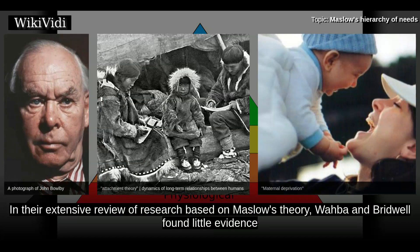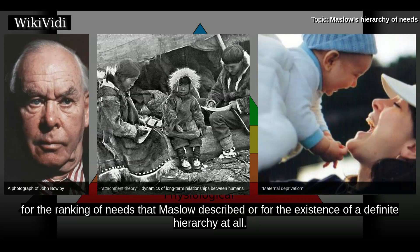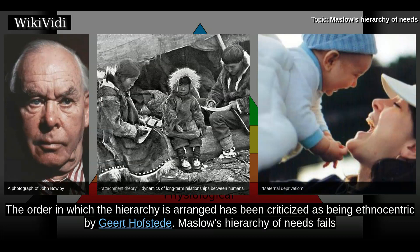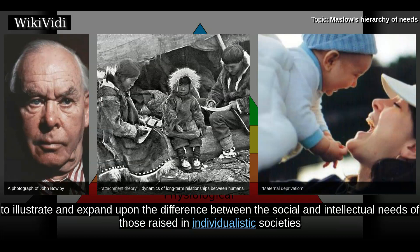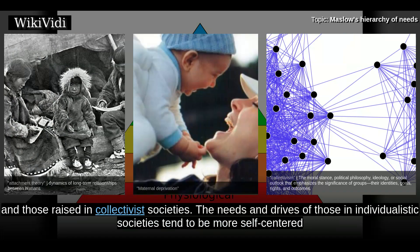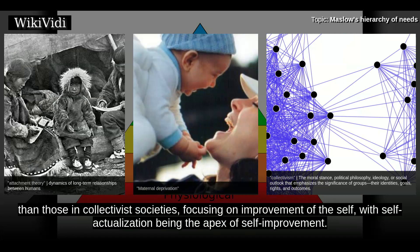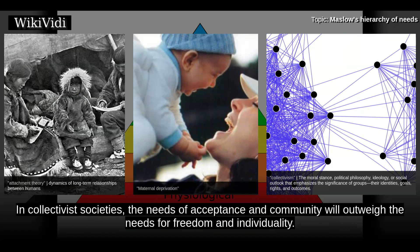In their extensive review of research based on Maslow's theory, Waba and Bridwell found little evidence for the ranking of needs that Maslow described, or for the existence of a definite hierarchy at all. The order in which the hierarchy is ranked has been criticized as being ethnocentric by Gert Hofstede. Maslow's hierarchy fails to illustrate the difference between the social and intellectual needs of those raised in individualistic societies versus those raised in collectivist societies. The needs of those in individualistic societies tend to be more self-centered, focusing on improvement of the self, with self-actualization as the apex. In collectivist societies, the needs for acceptance and community outweigh the needs for freedom and individuality.